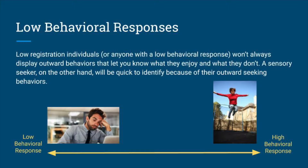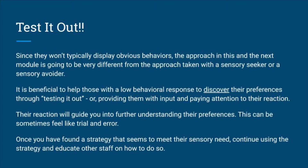Without high levels of input, these individuals aren't able to process the world around them and therefore have a tough time finding meaningful activities. However, with support they can be introduced to activities that they discover as enjoyable and that fulfill their sensory needs. Since these individuals won't be displaying obvious behaviors that let you know what they like versus what they dislike, the first step is to help them discover their preferences - in other words, you need to test it out. You can do this by providing them with different types of sensory input within each of their senses and by paying attention to their reaction. This can feel like trial and error at times, but can help you better understand what they need.